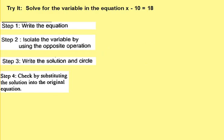Let's try it with the steps. Solve for the variable in the equation x minus 10 equals 18. First, write the equation: x minus 10 equals 18. Isolate the variable by using the opposite operation.